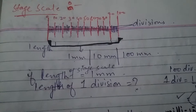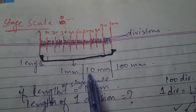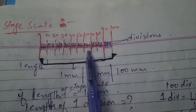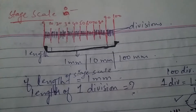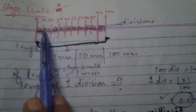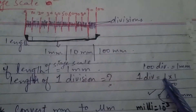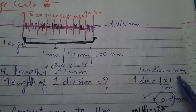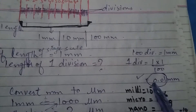Now, this is the stage scale. The scale can be 1 mm, or 10 mm, or 100 mm. If the length of the stage scale is 1 mm and it has 100 divisions, then 100 divisions equals 1 mm. Therefore, 1 division equals 1 divided by 100, which gives us 0.01 mm. So the length of one division of the stage micrometer is 0.01 mm.